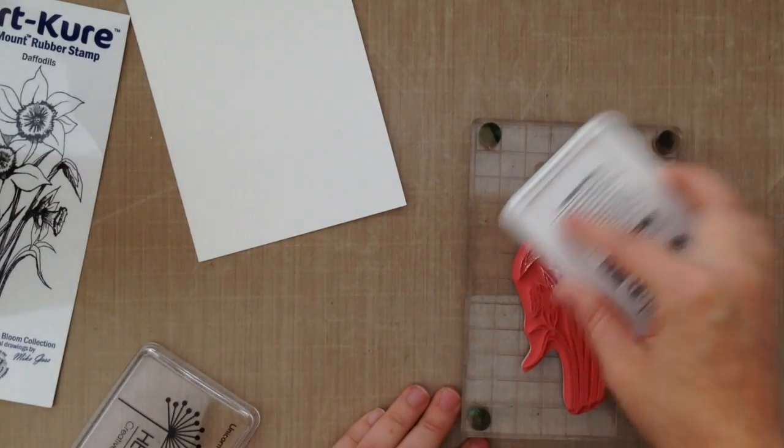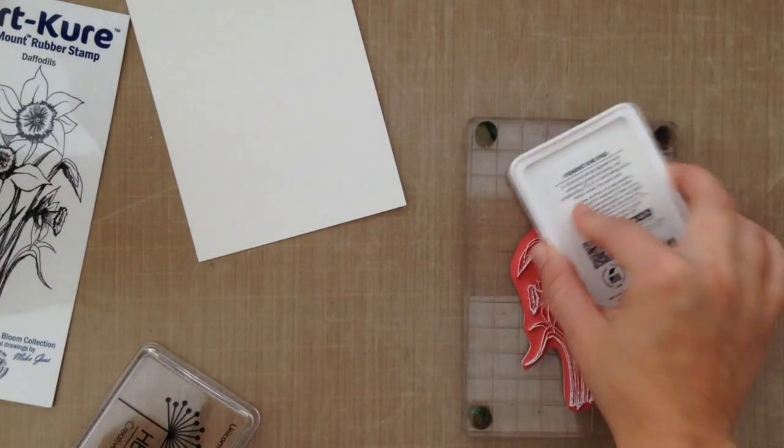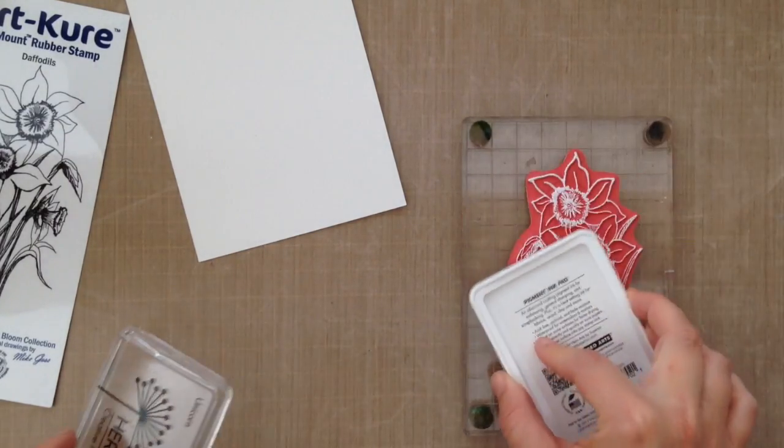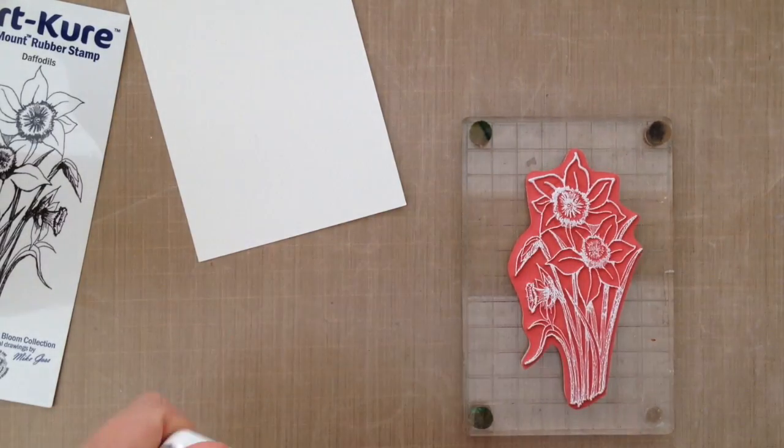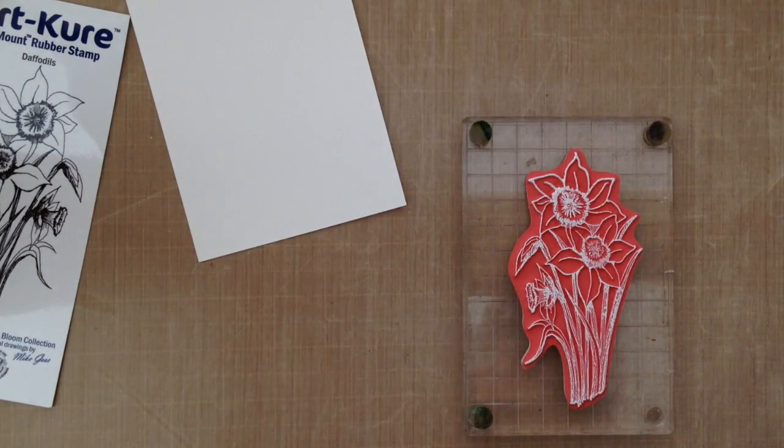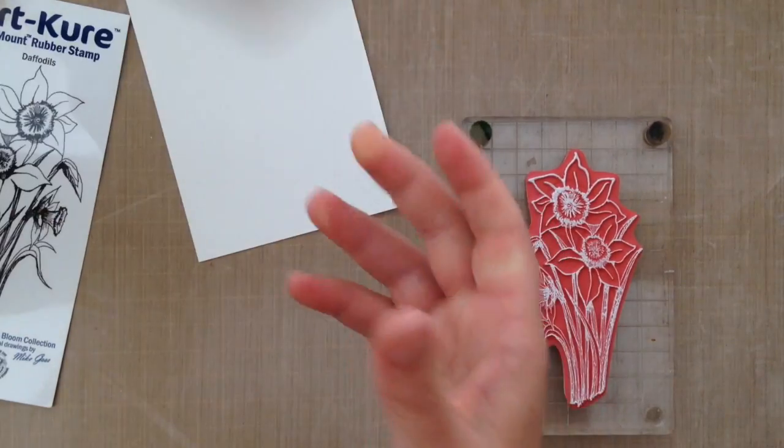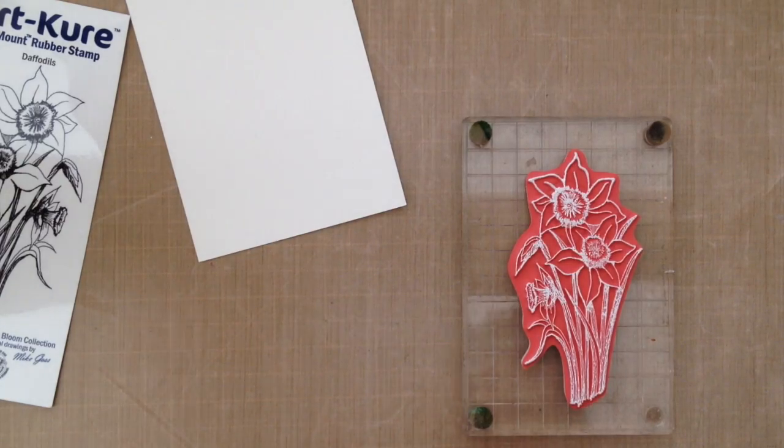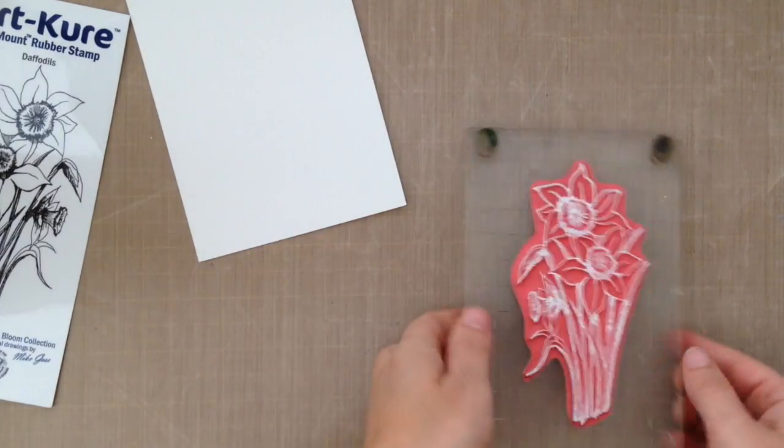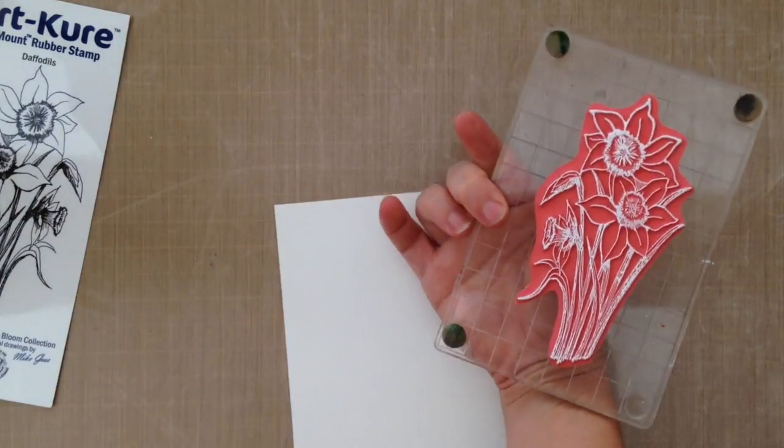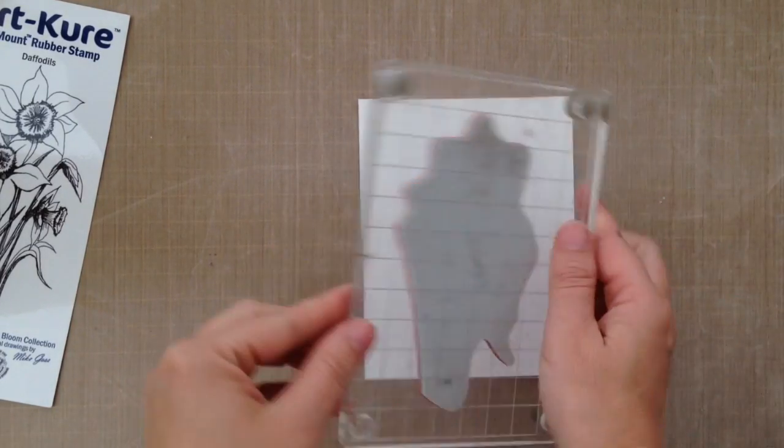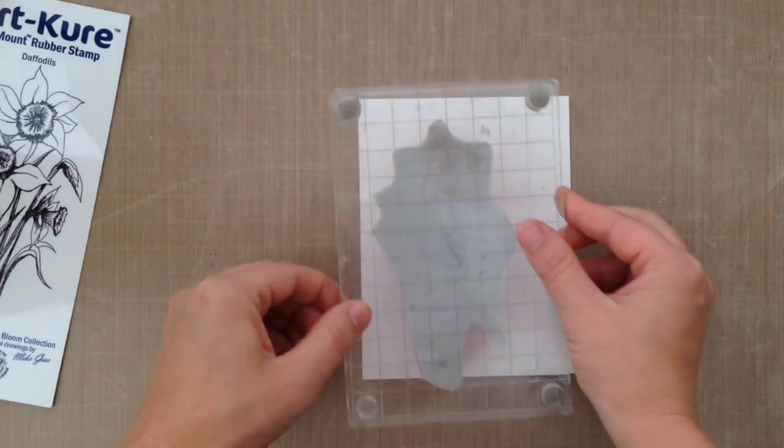I'm going to ink it up with some Unicorn White ink by Hero Arts. It's a white pigment ink, and I'm going to heat set that with some white embossing powder. Now I'm doing this for a couple reasons. One, I typically always use black ink, so I thought white would be something a little bit different.